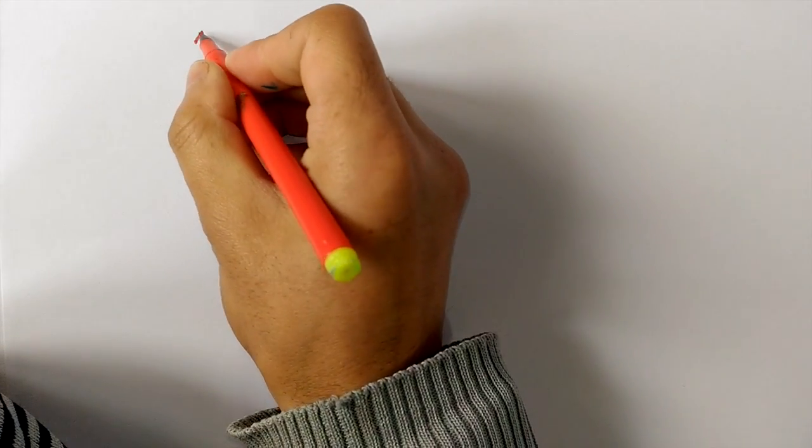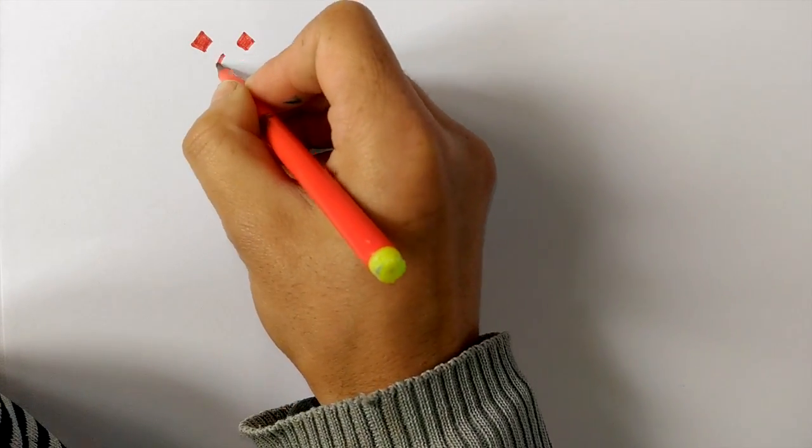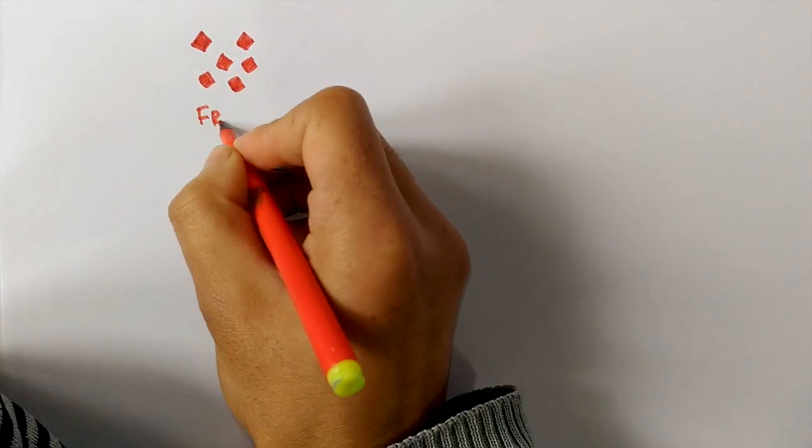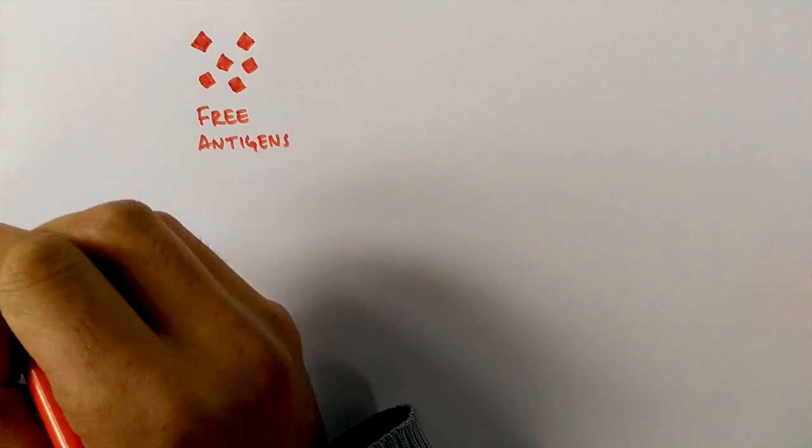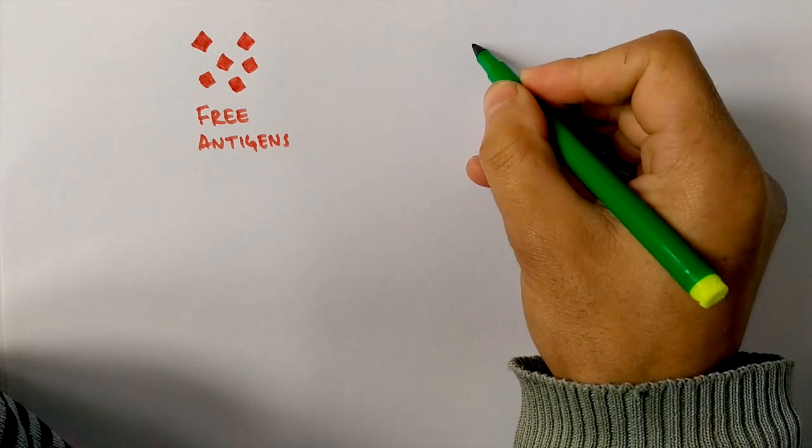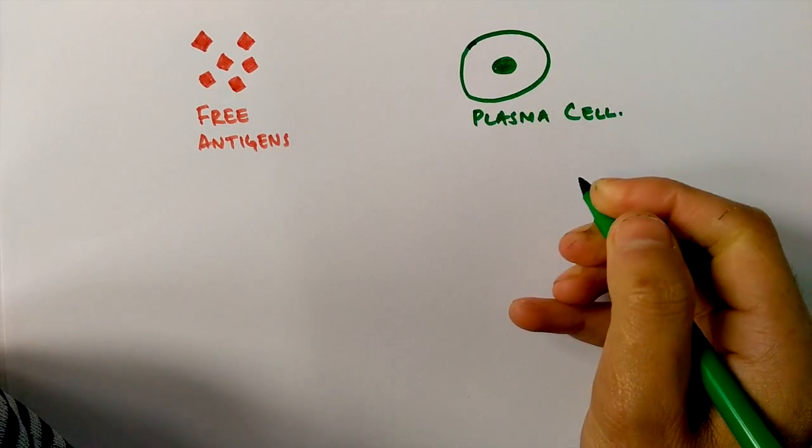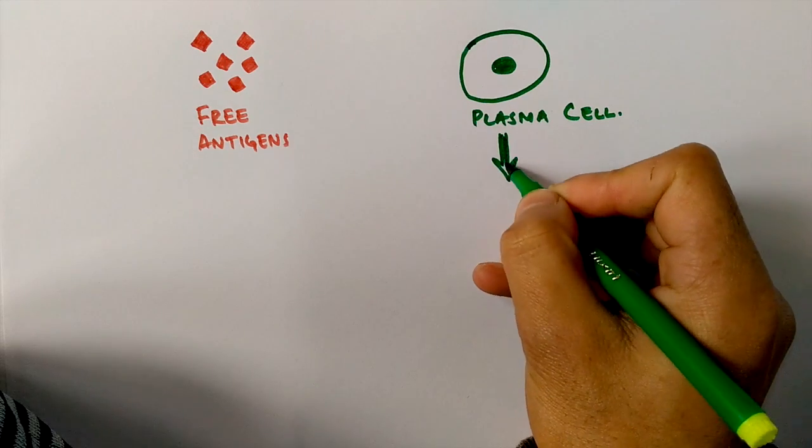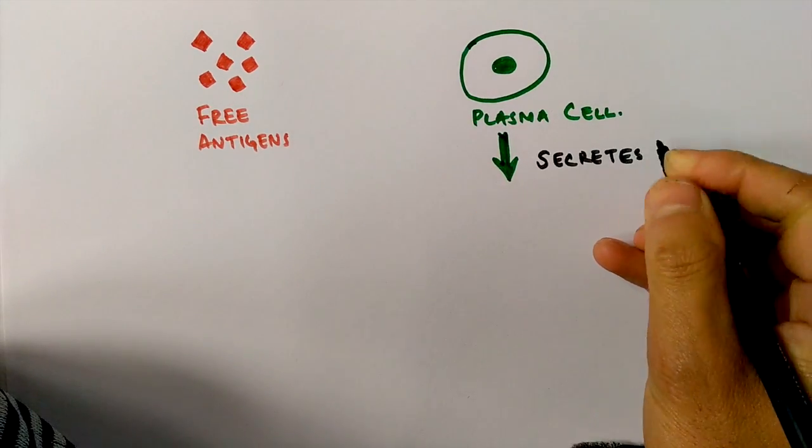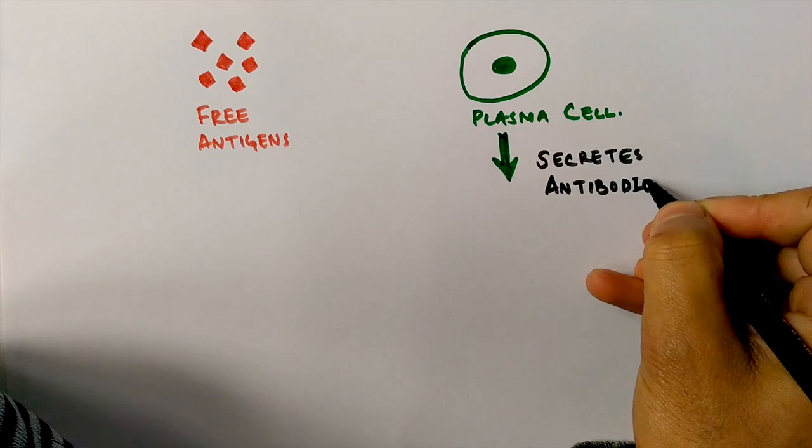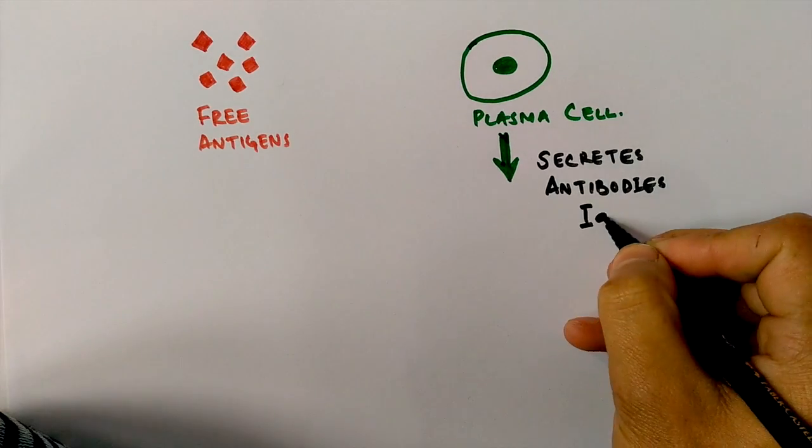Now let's see diagrammatically how these reactions occur. Let me draw some free antigens here like this. And from the other side, we have the plasma cell releasing antibodies IgG like this. Plasma cells have the property to secrete IgG antibodies in our immune system.